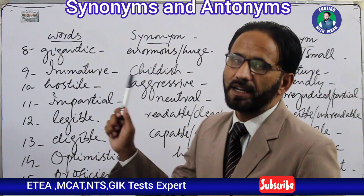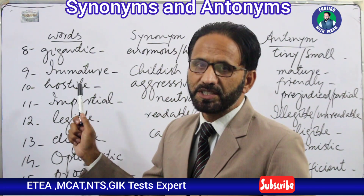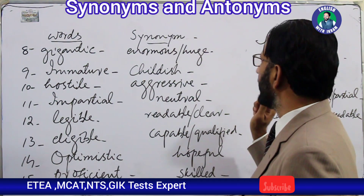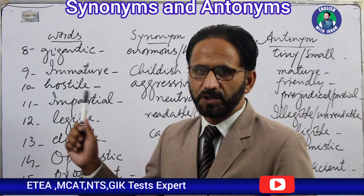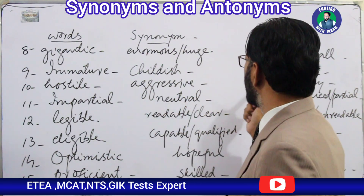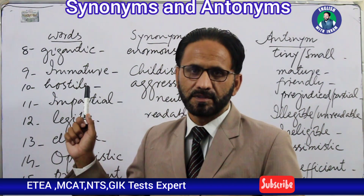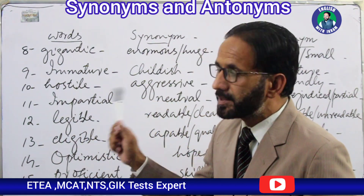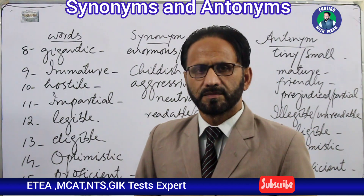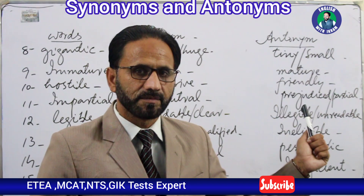Word number nine is 'immature' — note the difference from 'amateur.' The synonym for immature is 'childish,' and the antonym is 'mature.' Word number ten is 'hostile.' Hostile means aggressive or cruel — not friendly. The antonym for hostile is 'friendly.'